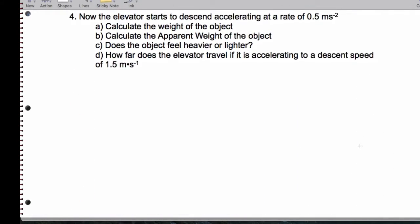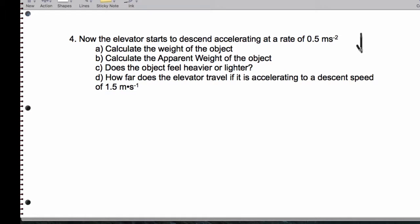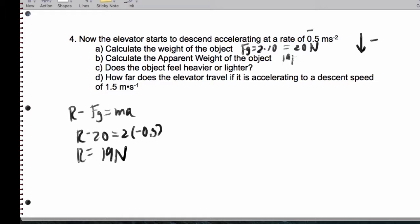Number 4 and 5. We start descending. So going downward. So that's negative acceleration. The weight Fg, 2 times 10. Again, where 10 is the acceleration due to gravity or the gravitational strength. That's 20 newtons. The apparent weight is the scale reading. That's R minus Fg is M times A. That's R minus 20 equals 2 times negative 0.5. R is going to end up being 19 newtons once again when we solve. You should do that algebra to verify that that's 19 newtons. Does the object feel heavier or lighter? It's going to feel lighter.